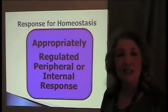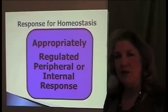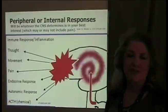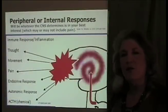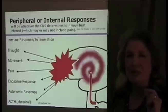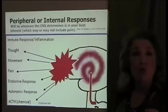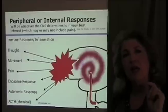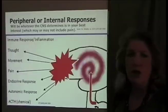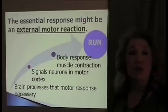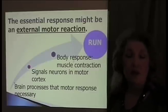The brain generates responses to the conclusions it draws. Whatever the CNS decides will protect you most and restore homeostasis quickest becomes the output — which might be an immune response, thoughts, movement, pain, endocrine, autonomic, or chemical responses. Pain is one of a myriad of responses the brain can choose. The brain might decide the essential response is an external motor reaction: signal the motor cortex, long muscles tighten, and you run.